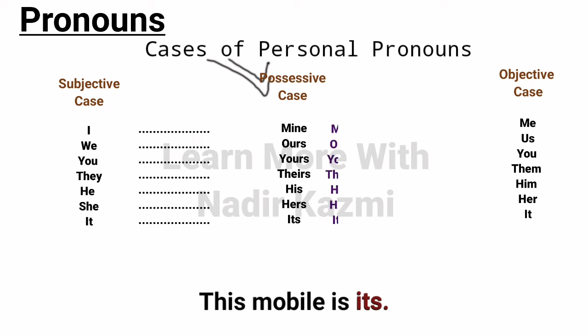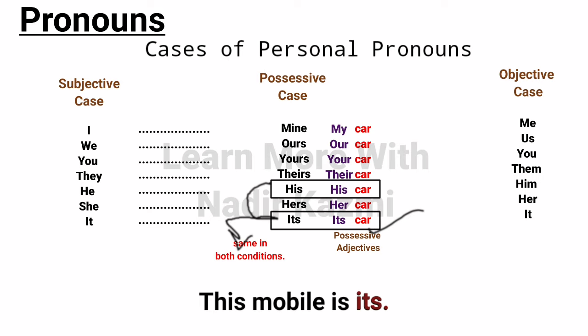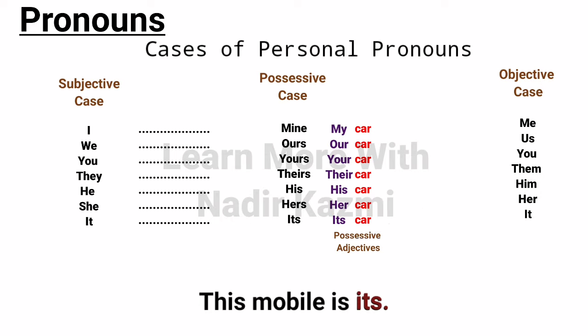You might wonder why 'my, our, their, your, her' are not listed here as possessive pronouns. That's because we are studying pronouns specifically, and these words — my, our, your, their, her — are not pronouns; they are possessive adjectives. They always carry nouns right after them, like 'my car, our car, your car, their car, her car.' They are never used without a noun. But mine, ours, yours, theirs, hers — these don't carry nouns immediately after them, so they are possessive pronouns.